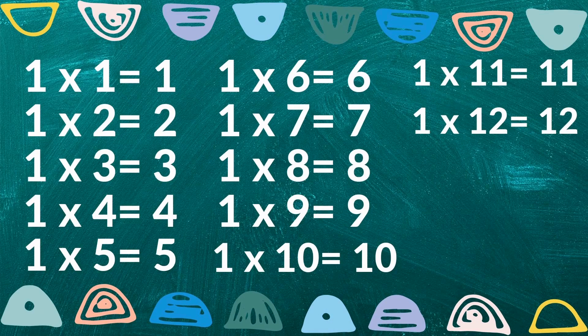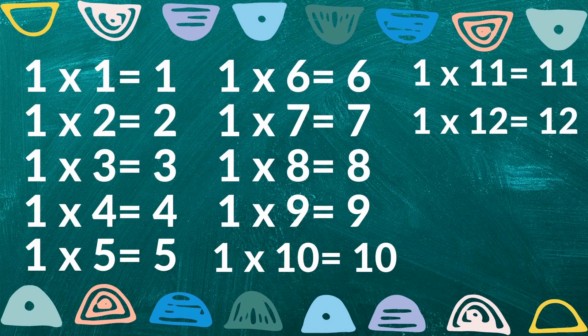Now we can all try singing it together — come on, let's try! One times one is one, one times two is two, one times three is three, one times four is four, one times five is five, one times six is six, one times seven is seven, one times eight is eight, one times nine is nine, one times ten is ten, one times eleven is eleven, one times twelve is twelve.